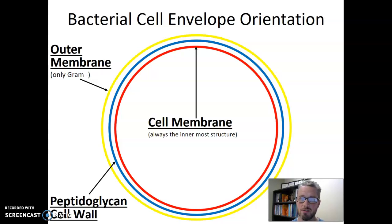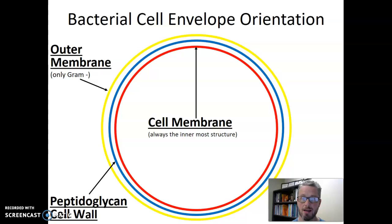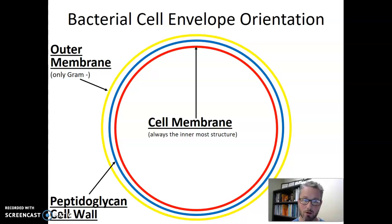The only bacteria that have the outer membrane are gram-negative bacteria. So we think about the differences between gram-negatives and gram-positives, and it's important to recognize that only gram-negatives have the outer membrane. This orientation — which layer is where — never deviates. The cell membrane is always the innermost layer, the peptidoglycan cell wall is just outside the cell membrane, and if it exists, the outer membrane is outside all of those layers.